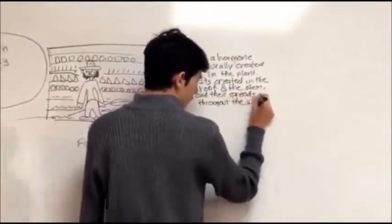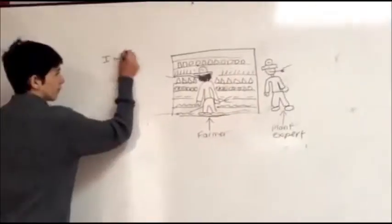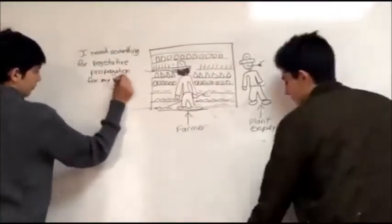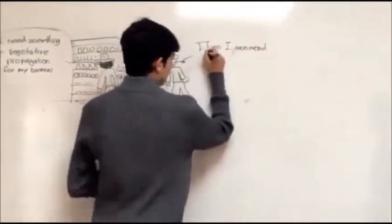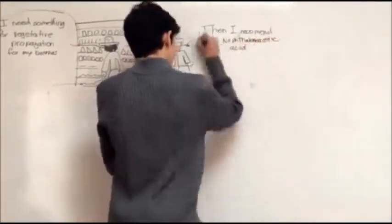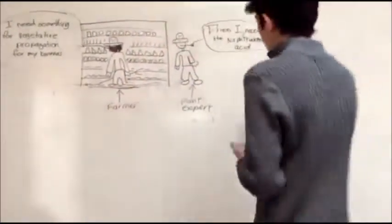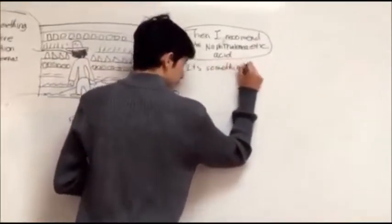Carlos told the plant expert that he needed a hormone for growth and vegetative propagation. The plant expert thought for a minute and then said, 'I think I have the right hormone for you.'